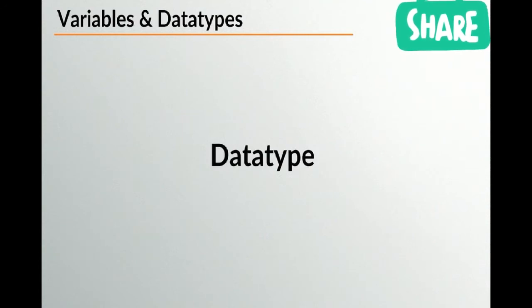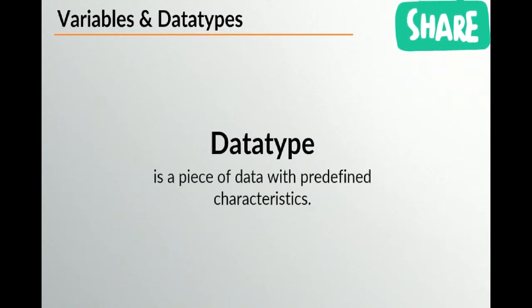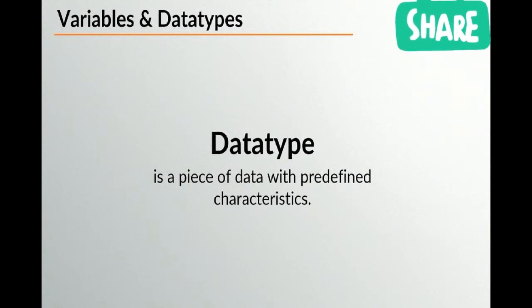What about data types? Data types are a piece of data with predefined characteristics. Terms like string and number are pieces of data with predefined characteristics. A string is a sequence of characters, numbers, and symbols. A number is exactly what it says on the tin, and you can do mathematics on the number data type.